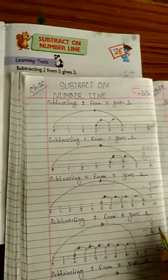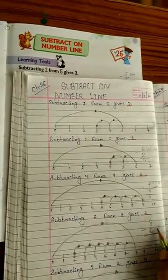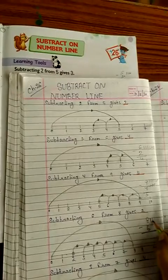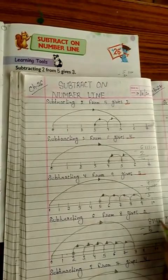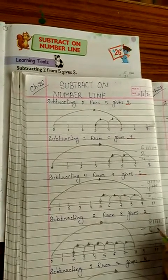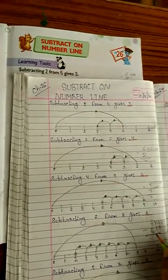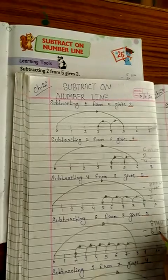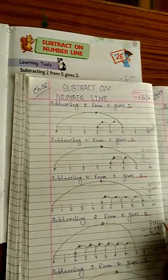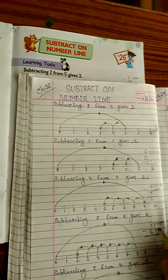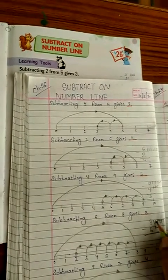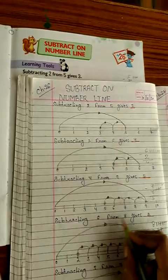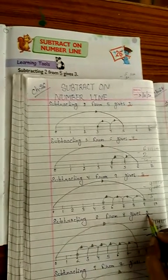Sorry, once again I am going to explain. First draw 8 lines: 1, 2, 3, 4, 5, 6, 7, 8. Then how many lines do you have to cancel? 6 lines: 1, 2, 3, 4, 5, 6. The left ones: 1, 2. So 8 minus 6 is equal to 2.